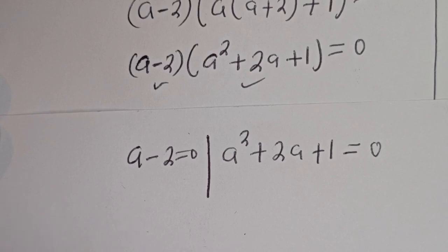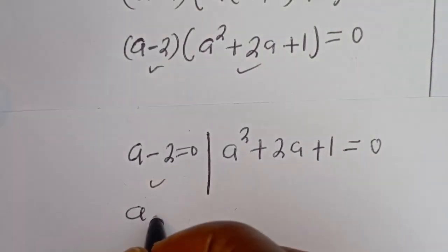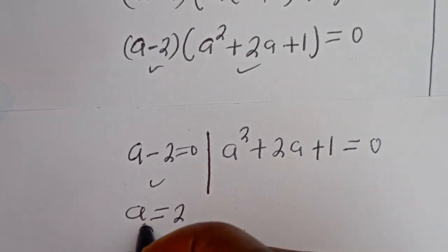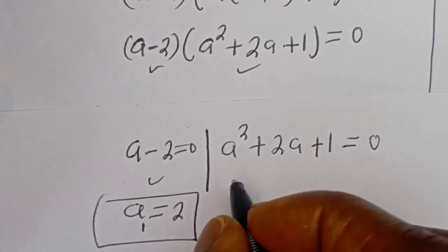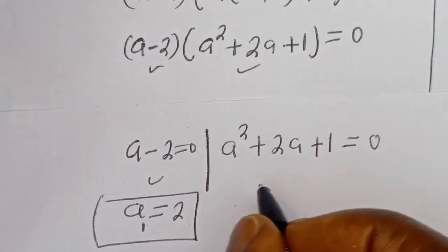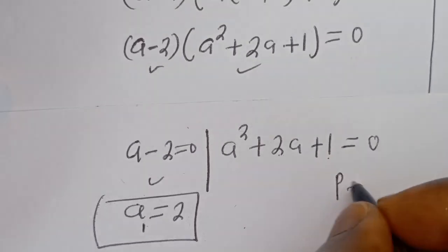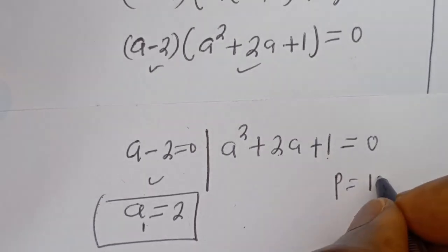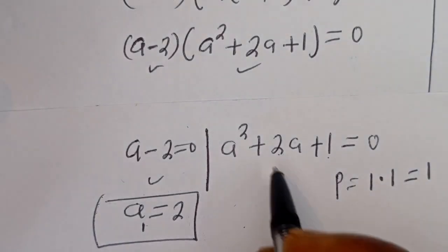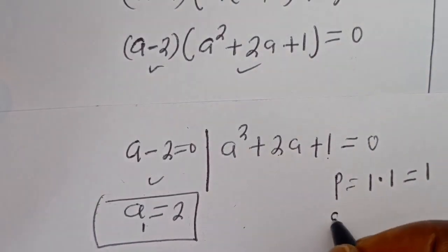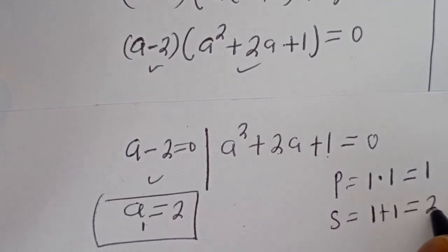From the first case, A is equal to 2. Let's call this A1. From the second case, this is a quadratic equation. Let's solve it using the factorization method. We have the product P equal to 1 multiplied by 1, which is equal to 1. Then the sum is 1 plus 1, which is equal to 2.